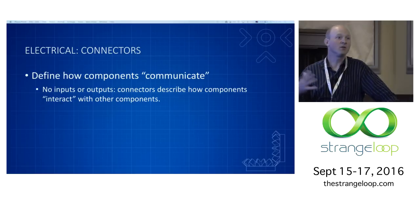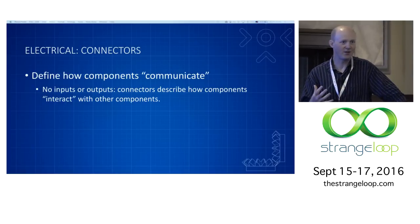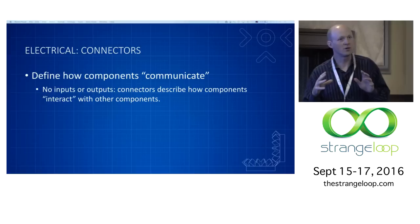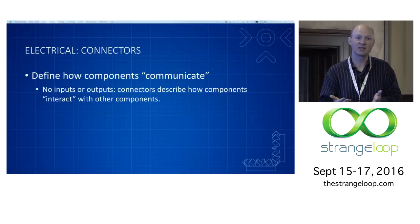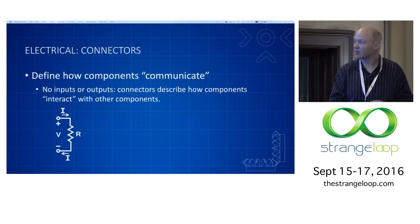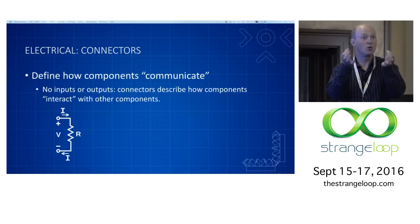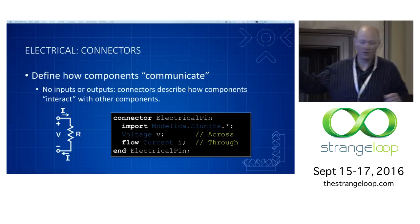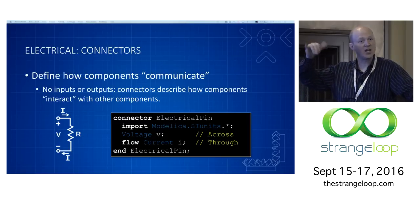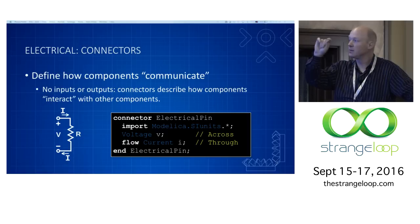The first thing we have to think about is how these components are actually going to communicate with each other. When you're programming in an imperative sense, you can think of functions with input values and output values, but we don't really have that here. Instead, what we have is points at which different components interact. But there's no real input or output. When you think about a resistor, you don't think about it as having voltage as an input and current as an output. It just has a relationship between voltage and current. But actually how that plays out depends on the other things that it's connected to. So we have this concept in Modelica of what's called a connector.